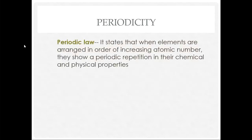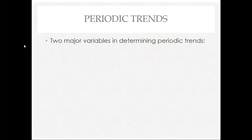This is all based on the periodic law: when elements are placed in order of increasing atomic number, they show a repetition in their chemical and physical properties. Today we're going to talk about five of those properties. But before we get there, let's talk about the two variables we looked at last class that determine the periodic trends we're discussing today.